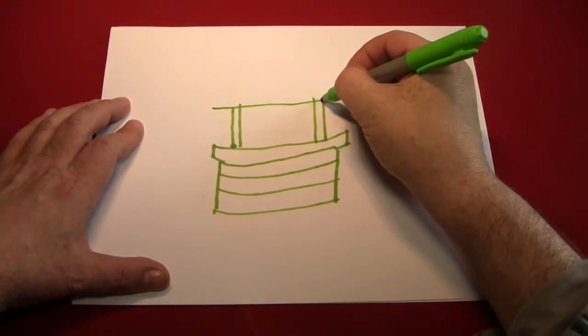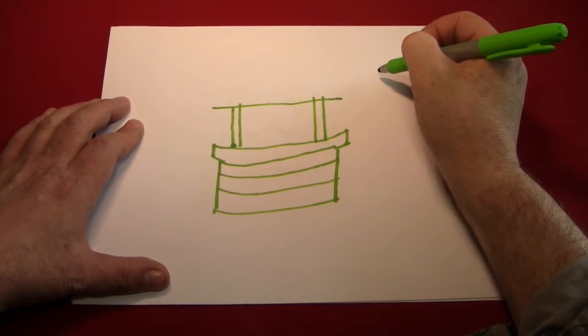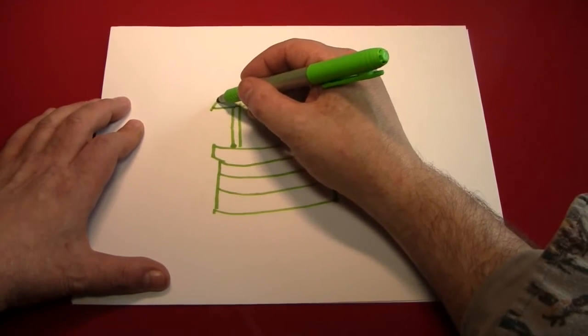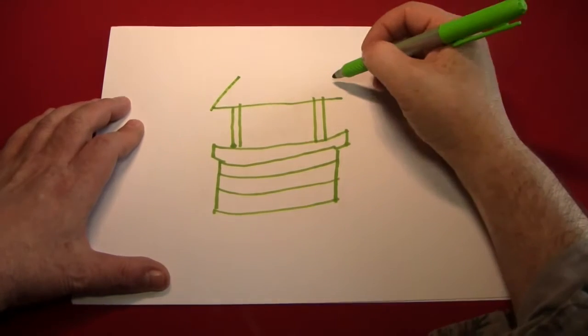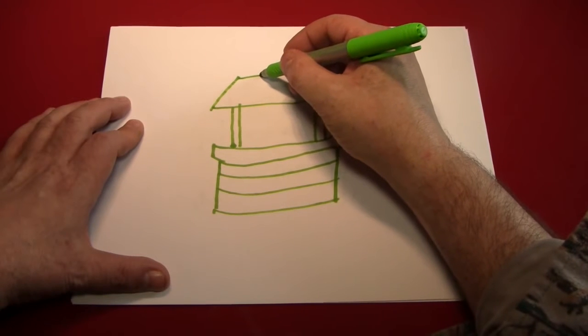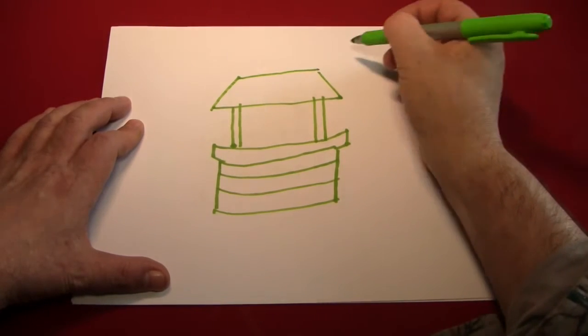Then, a line goes over that, and we've created the top of the wishing well, which is a trapezoid for some reason. Well, it always is, isn't it?